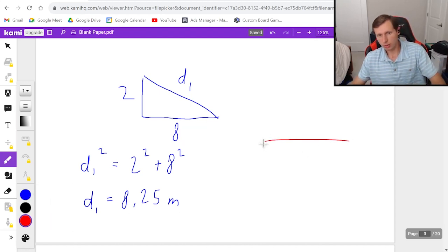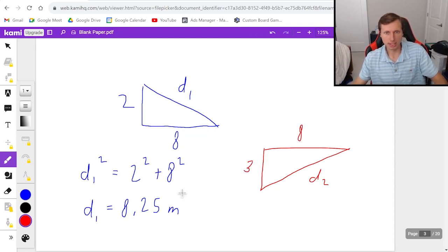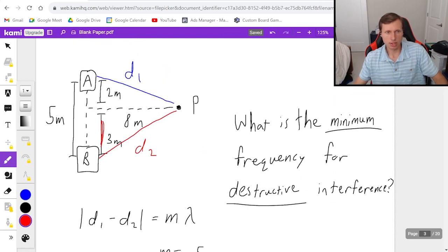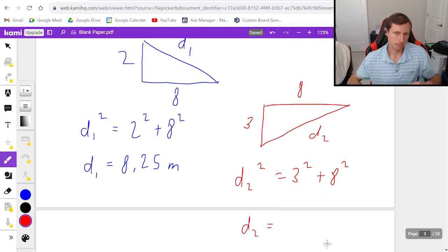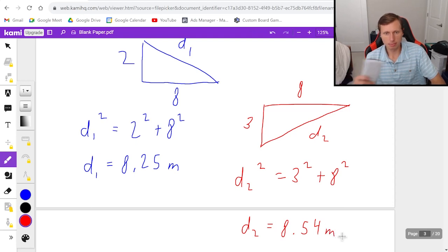Now d2, the bottom triangle, d2 is the hypotenuse. Eight is still that leg, but this side is now three. And if you don't believe me, just look at the picture, three here, eight here, and there's a right triangle. So then here, d2 squared equals three squared plus eight squared. And solving for d2, we'll get a final answer of 8.54 meters.